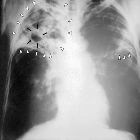In 15-20% of active cases, the infection spreads outside the lungs, causing other kinds of TB. Extrapulmonary TB occurs more commonly in people with a weakened immune system and young children. In those with HIV, this occurs in more than 50% of cases.